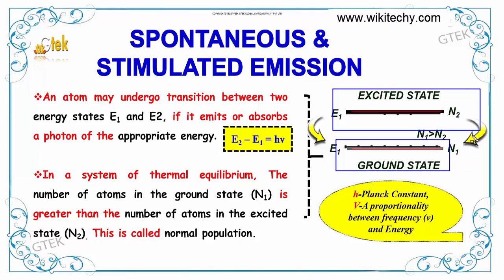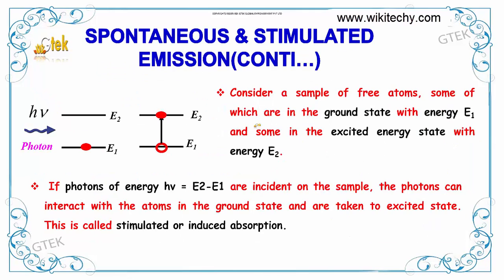Consider a sample of free electrons, some of which are in the ground state with energy E1 and some in the excited state with energy E2. If photons of energy h nu equal to E2 minus E1 are incident on the sample, the photons can interact with the atoms in the ground state.